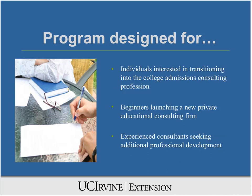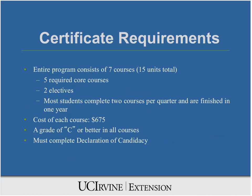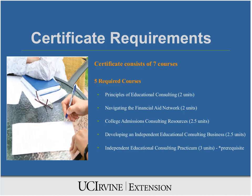The certificate program is composed of five required courses and two electives, which add up to seven courses or 15 units total. To be eligible for this certificate, students must complete all seven courses with a letter grade of C or better, as well as a completed declaration of candidacy. Since there is a small candidacy fee, I usually advise students to take a few courses before they apply, just to make sure that they want to complete the full program.